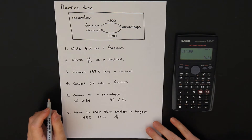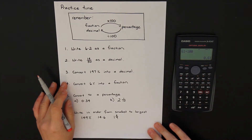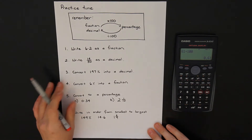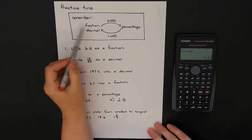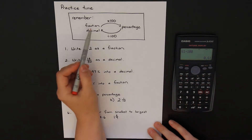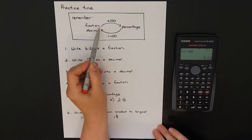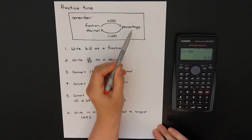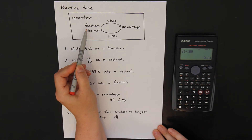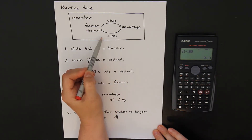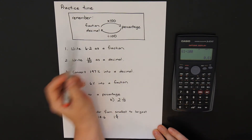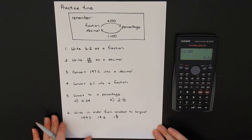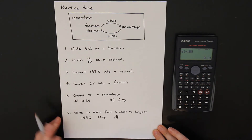Now it's time for you to have a practice. To help you out, remember: if you want to convert a fraction or decimal to a percentage, multiply by 100; if you want to go from a percentage back to a fraction or decimal, divide by 100. Pause the video, grab a pen and paper, try each of these questions, then unpause and we'll go through the answers together.